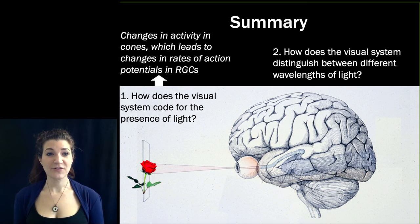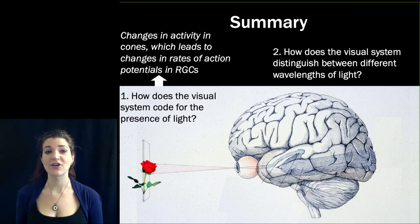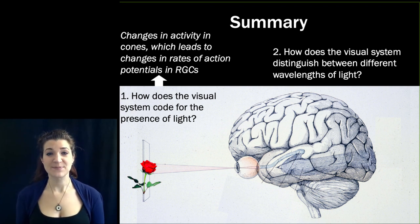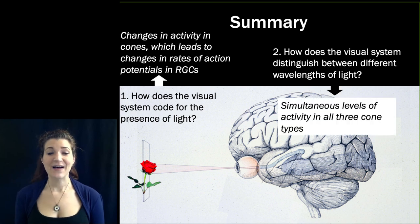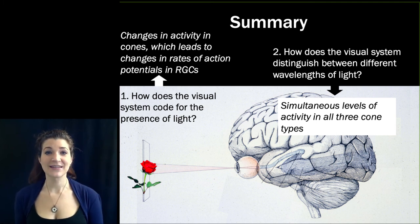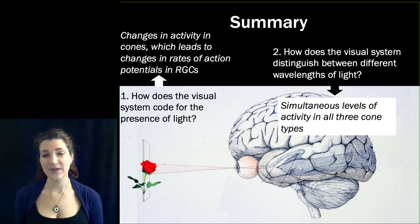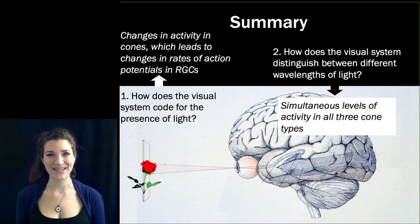To summarize: changes in activity in cones lead to changes in the rates of action potentials in retinal ganglion cells — that's how we code for the presence of light. And the visual system distinguishes between different wavelengths of light via the simultaneous level of activity in all three cone types. In class, we're going to continue to build on this and think about how the phenomena we've described here help us understand some really cool things we've experienced so far, like metamers and magenta. See you in class.